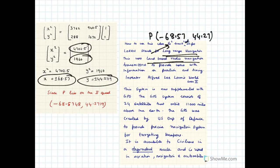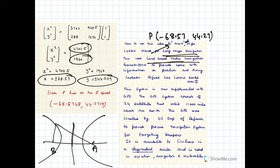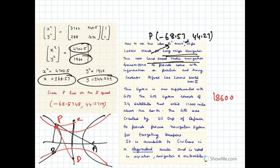What we actually used was two receiving stations A and B — we found the difference PA minus PB, then traced a hyperbola. Then we took two more stations C and D, found the difference between those two signals, plotted another hyperbola, and precisely found the coordinate of P. The radio signals travel at a speed of 186,000 miles per second, so using the time lag multiplied by this speed gives us the distance PA minus PB.